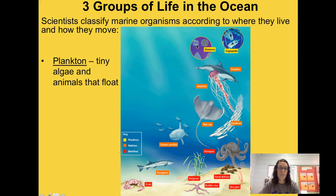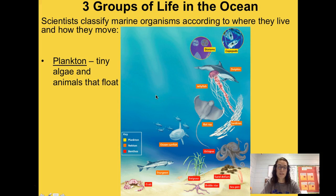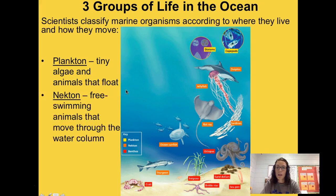Plankton can be phytoplankton, which are autotrophs — they make their own food. Or they can be zooplankton — 'zoo' meaning animal — so they are more animal-like and need to consume their food. You'll see that on the food web chart on the next slide.